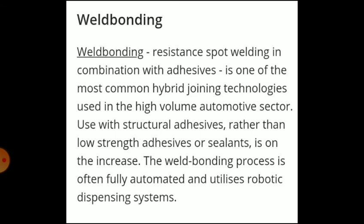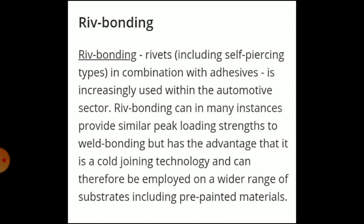In the automotive sector, these hybrid joining processes are widely used. The weld bonding process is often fully automated and utilizes robotic dispensing systems, increasingly using structural adhesives rather than low-strength adhesives or sealants. Rivet bonding is a combination of riveting and adhesive bonding, also increasingly used in the automotive sector. It can provide similar peak loading strengths to weld bonding but has the advantage of being a cold joining technology, employable on a wide range of substrates including pre-painted materials.